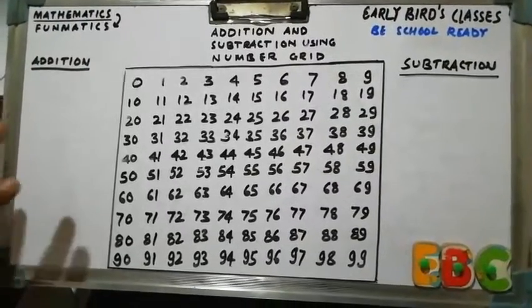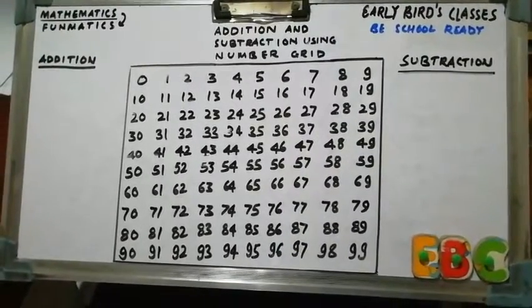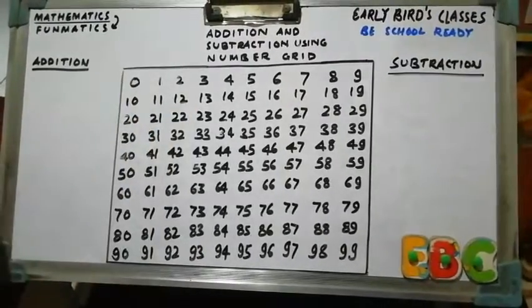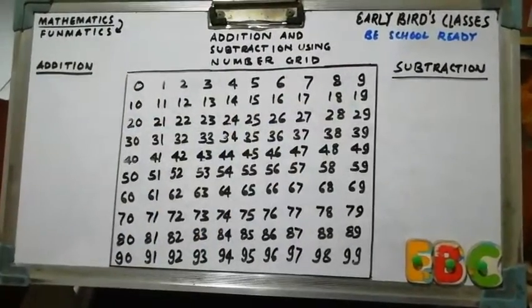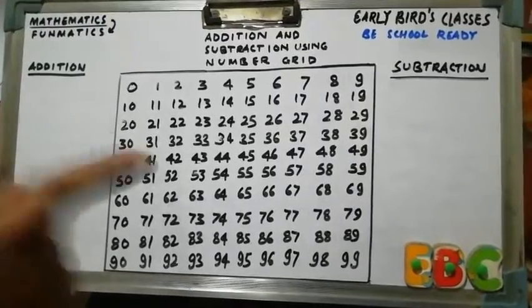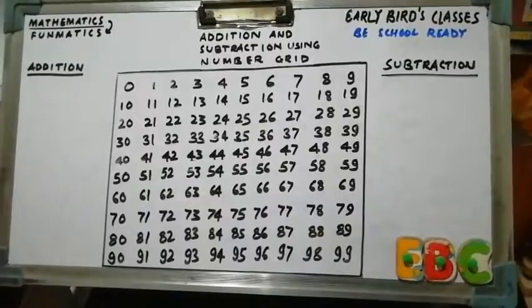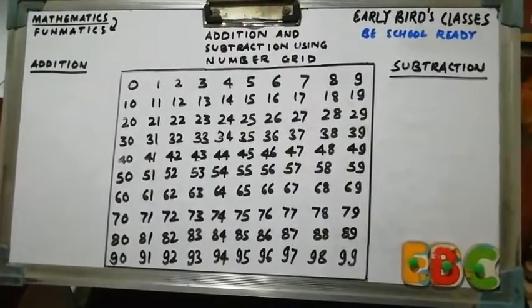This is number grid from 0 to 99. Here in this number grid, if we traverse horizontally, number will increase by 1. But if we traverse vertically downward, number will increase by 10.